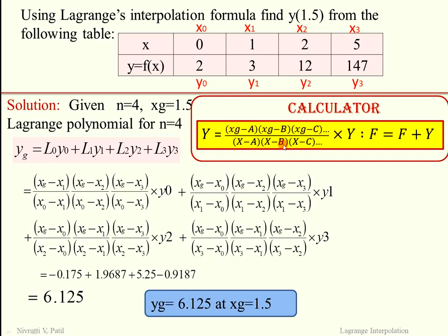For the L0·Y0 term: XG is 1.5, A is X1, B is X2, C is X3; X (in denominator) is X0, with A, B, C again as X1, X2, X3; and Y is Y0. For the L1 term: A is X0, B is X2, C is X3; X is X1; and Y is Y1. After the formula, we write a colon, then F = F + Y, where F is an accumulator variable for sequential addition of the terms.